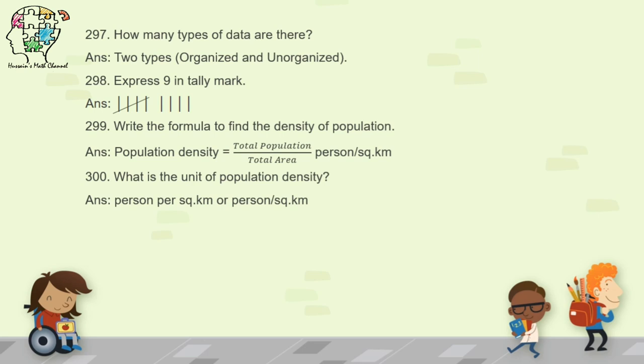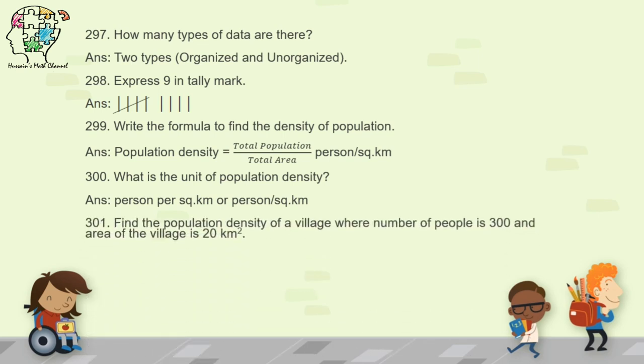Question 301: find the population density of a village where the number of people is 300 and the area is 20 square kilometers. Using the formula, divide 300 by 20 to get 15 persons per square kilometer. You must write the unit with the answer.